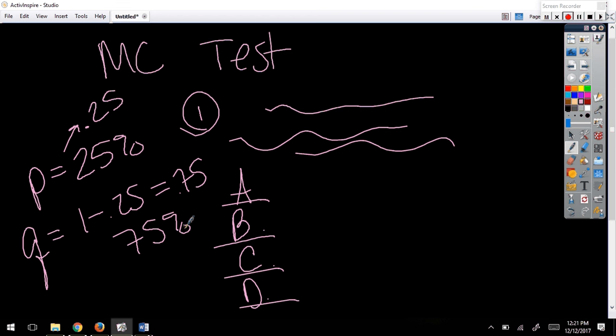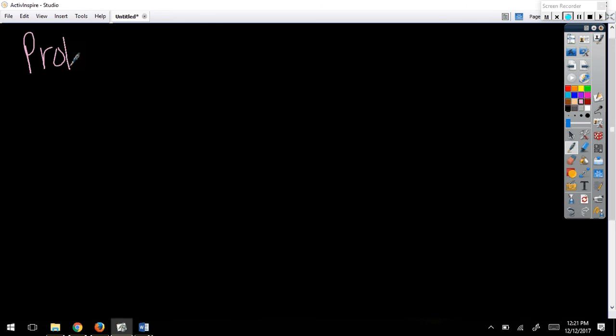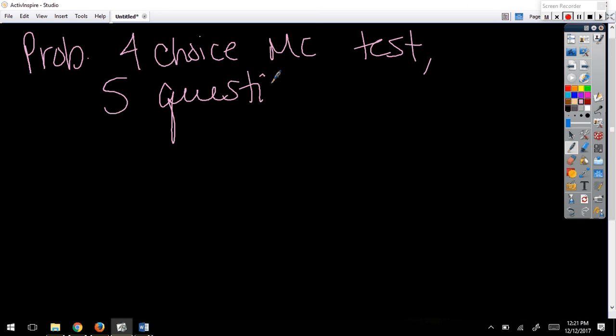So we use this because what if I upped the ante a little bit and I said that your test had five questions? What's the probability? How many would you have to get right out of five questions to pass? Three. You've got to get three right. So my question is, what's the probability we got four-choice MC test, five questions.